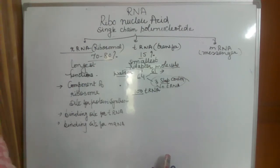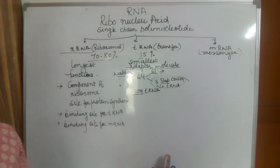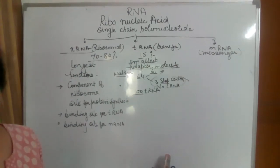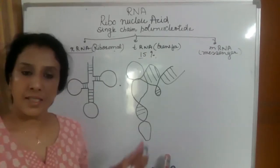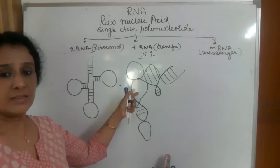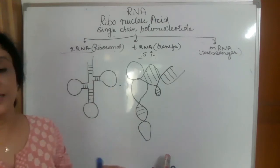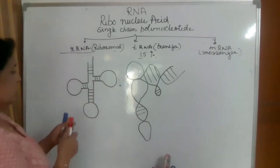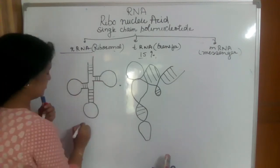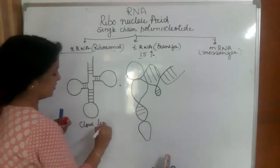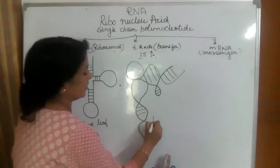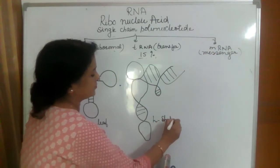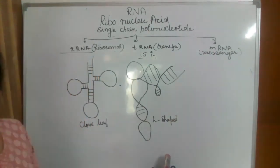tRNAs play a very important role and their structure is adapted accordingly. Let us study the structure of tRNA. There are two different views of the tRNA structure. One is called the cloverleaf structure, and the other is the L-shape structure.